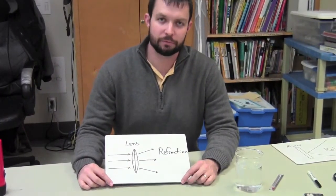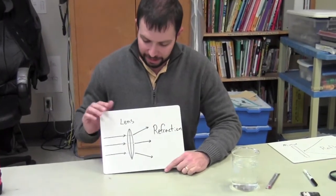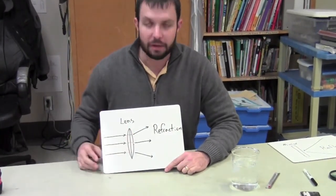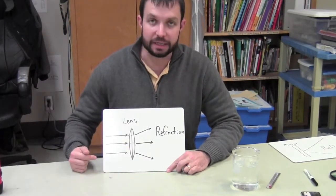Now let's talk about refraction. Refraction is the bending of light. In this example, I have a lens. When light comes in contact with the lens, it passes through. But what happens is, because of the shape of the lens,